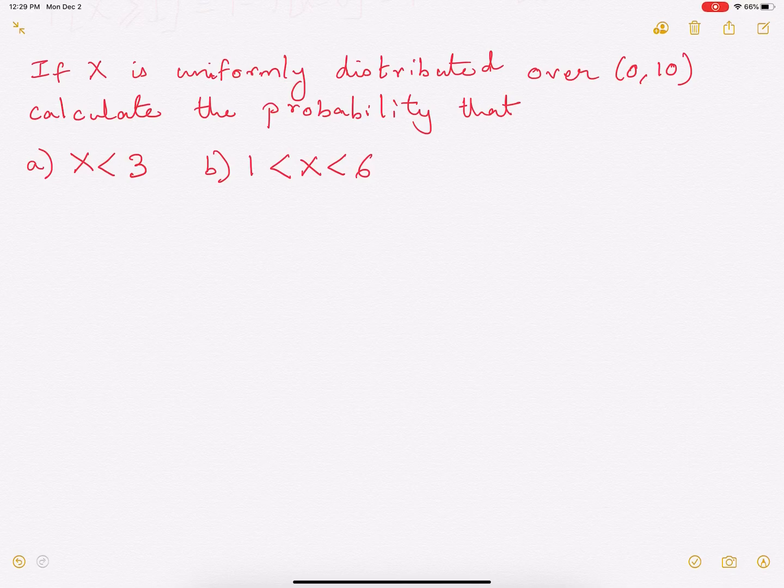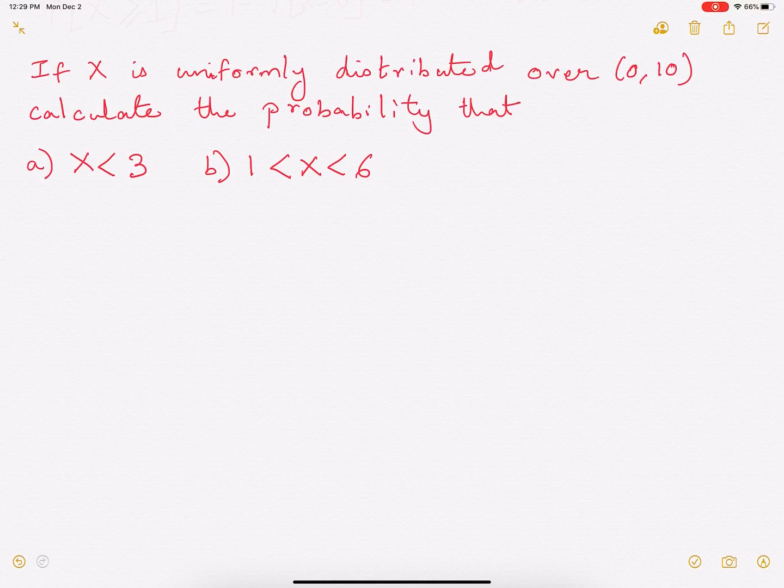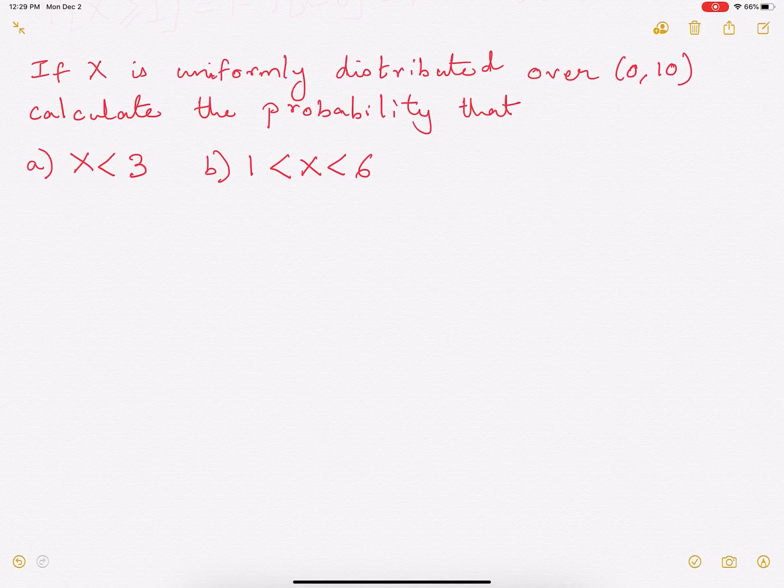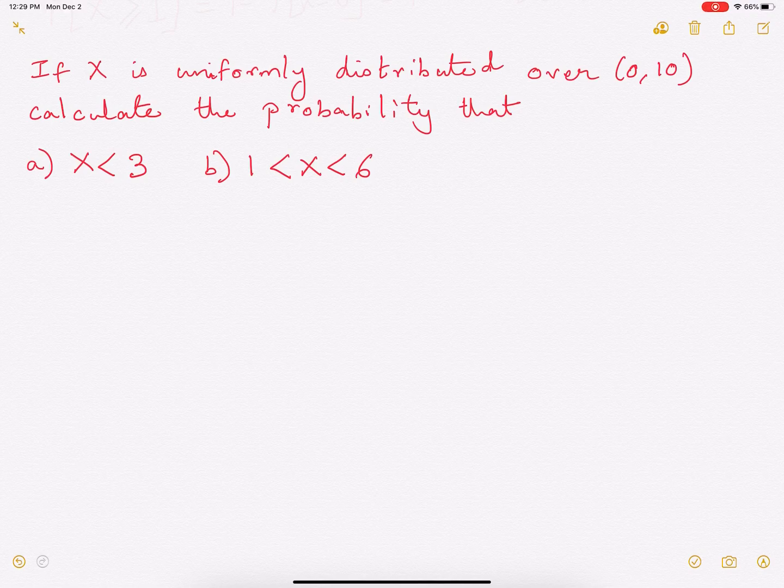Hi everyone, in this video we'll study uniform distribution using a simple example. The problem is x is uniformly distributed over 0, 10 and we have to calculate the probability that x is less than 3 and the second problem is we have to find the probability that x lies between 1 and 6.